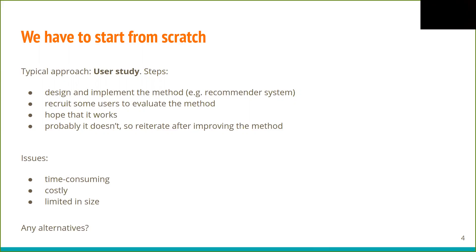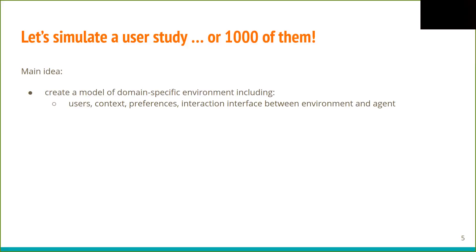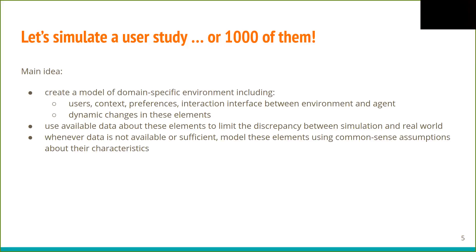What are the alternatives? We propose that we should simulate a user study or even 1000 of them. The main idea is to create a model of domain-specific environment, including elements such as users, context, preferences, and interaction interface between environment and agent recommender system. The environment should also include dynamic changes in these elements. We can model them by using available data to limit the discrepancy between simulation and real world.